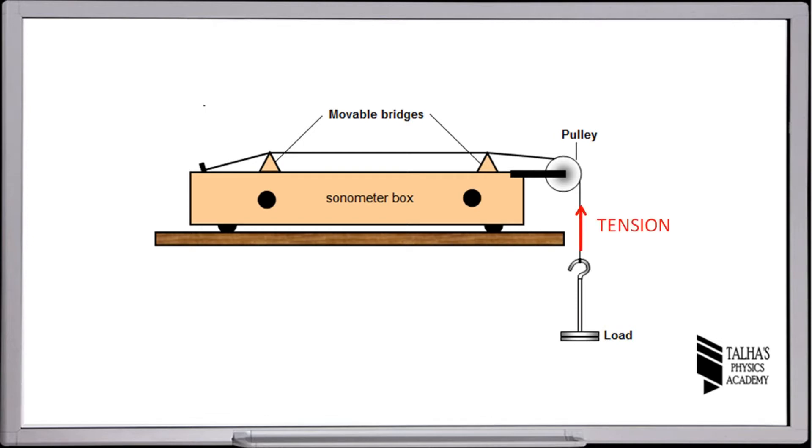This is the load which will produce the tension in the string in the upper direction. So, we can say that when we increase the load then it will increase the tension in the string. Due to this tension, when the sonometer wire is vibrated, then a stationary wave is produced between the movable bridges.